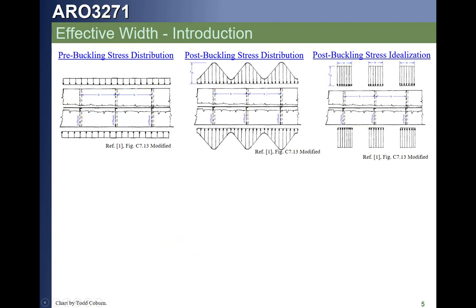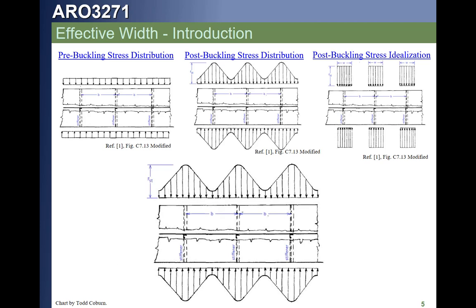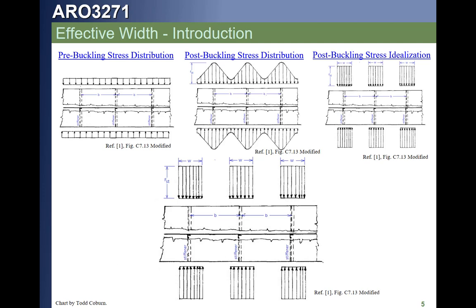So for low loads we get a uniform distribution which becomes non-linear as loads increase. What we do is abandon that actual distribution and pretend we have a uniform distribution on the stringer plus some effective width of skin w, at a stress level f_st — the allowable critical buckling allowable of the stringer acting with the skin. Each effective width is based on the panel width dimension b, and we're trying to calculate that w dimension. That's the introductory framework for where we're headed today.